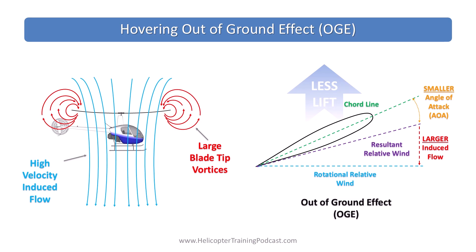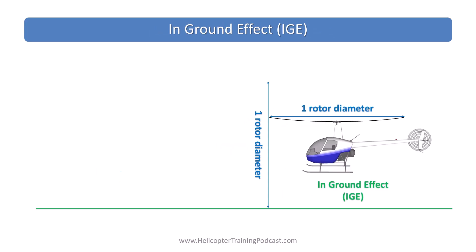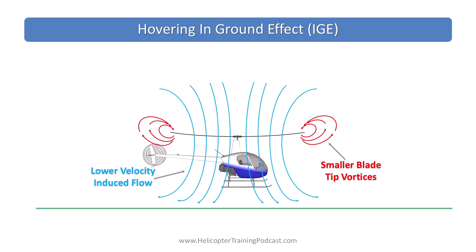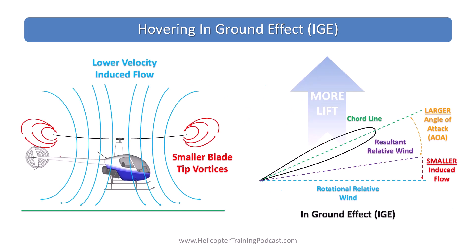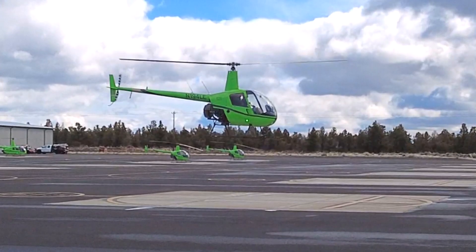Contrast this with hovering in ground effect, which is less than one rotor diameter from the surface — that would be within 25 feet for an R22, which has a rotor diameter of about 25 feet. The surface interferes with that induced flow, reduces the induced flow rate, and reduces the ability for larger vortices to be generated around the edge of the rotor disc. This improves the lifting efficiency of the entire rotor disc and reduces the power required to hover. These differences can be significant, allowing a helicopter to hover in ground effect with a much heavier load or in thinner air than when out of ground effect.